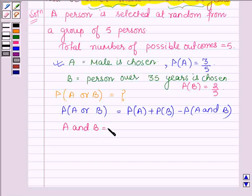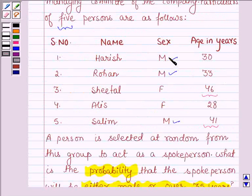So A and B denotes the event that a male is chosen whose age is over 35 years. So let's see the data once again. Now here we have three males. Harish ages 30 years, Rohan's ages 33 years and Salim's ages 41 years, which is over 35 years.